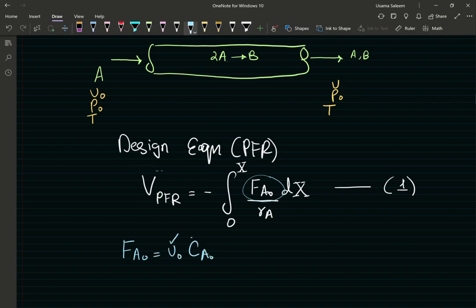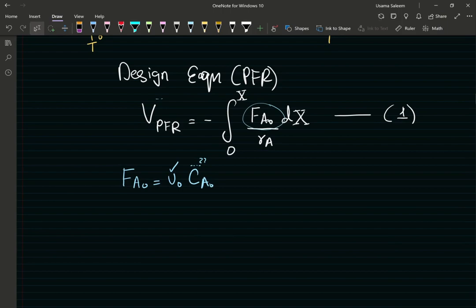FA0 can be written as inlet flow rate times CA0. I've been given inlet flow rate, but I don't really know CA0. But hey, this is where I use ideal gas law. If I use ideal gas law, PV equals NRT. I rearrange this. P over RT. And this just becomes equal to the concentration.